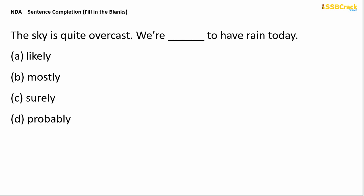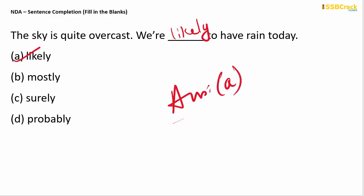Next question: 'The sky is quite overcast — that means clouded. We are ___ to have rain today.' It's possible that we can have rain today. The options are: likely, mostly, surely, probably. The correct answer is 'likely,' which means there is a good chance. So your answer is option A — we are likely to have rain.